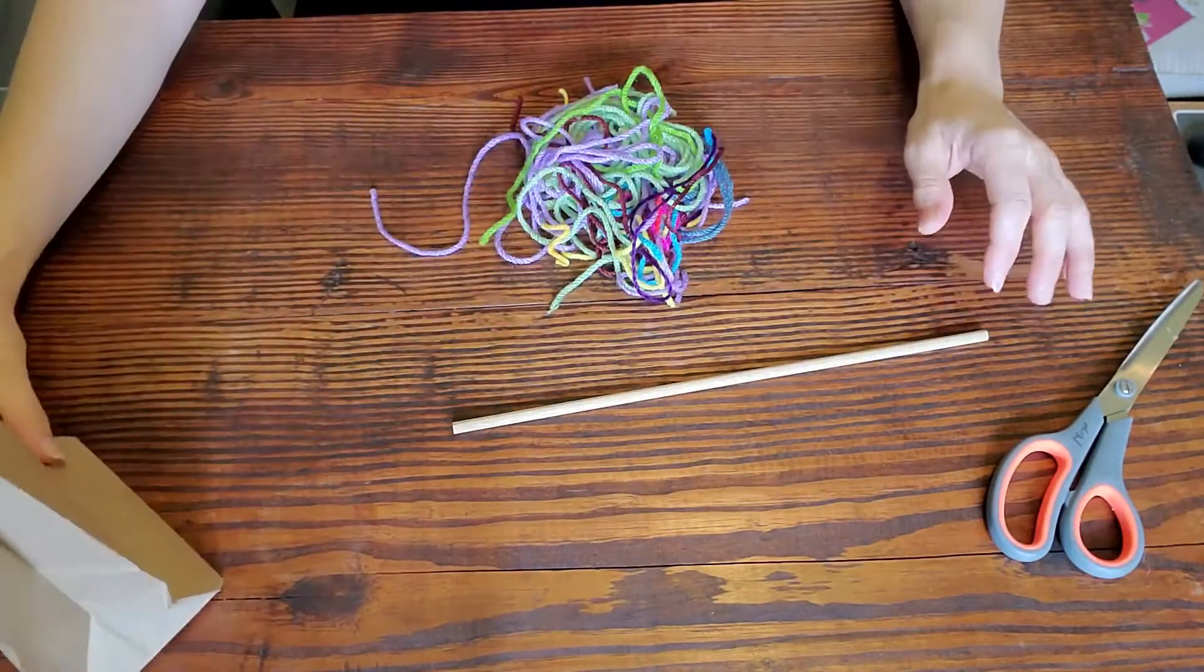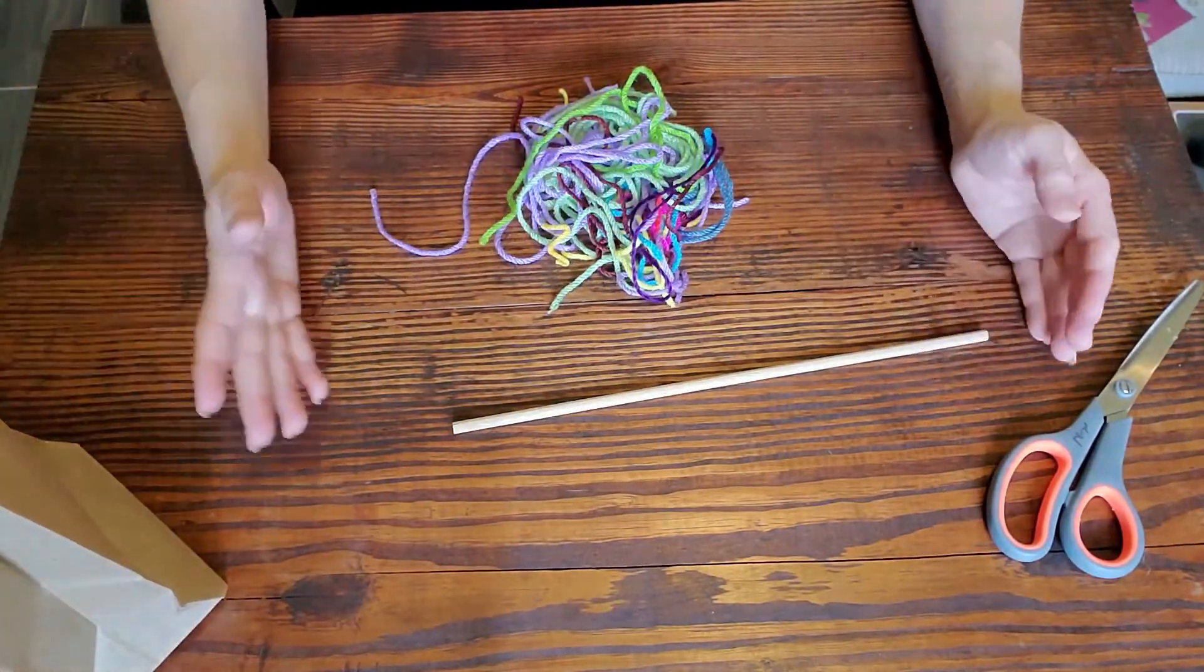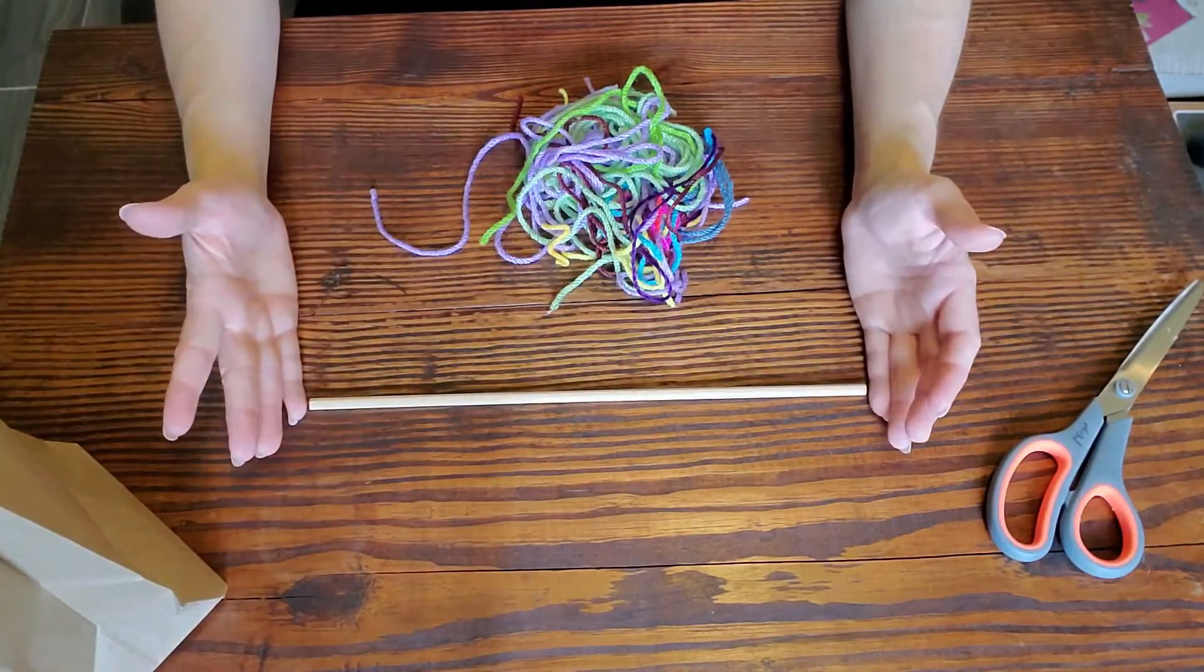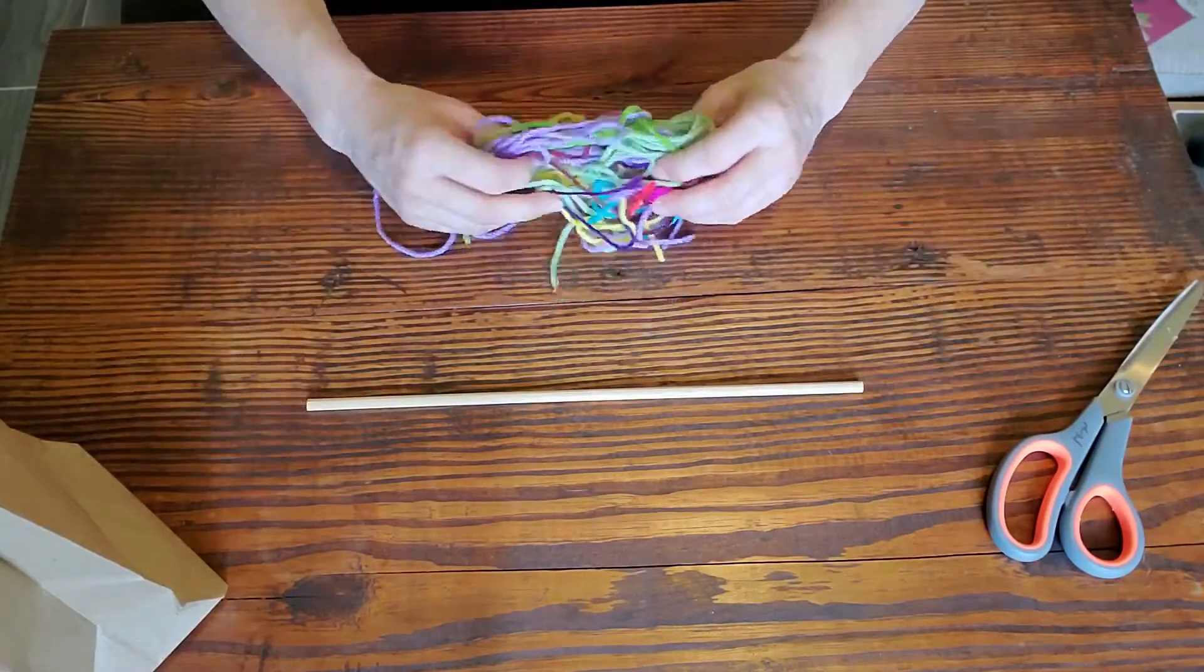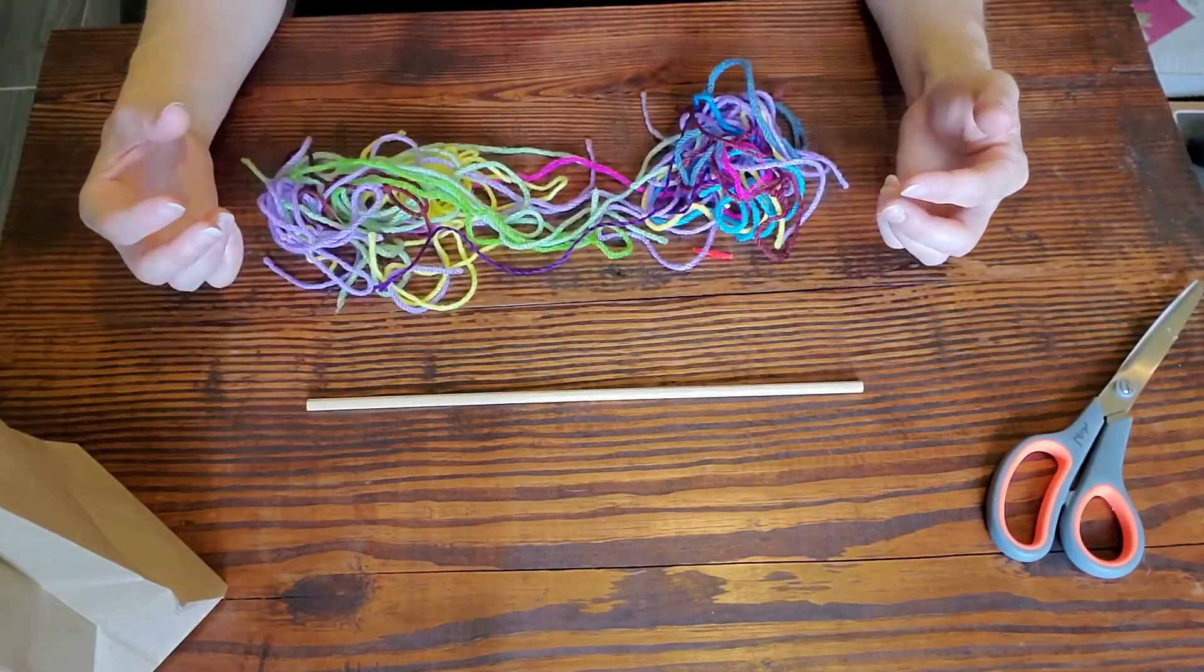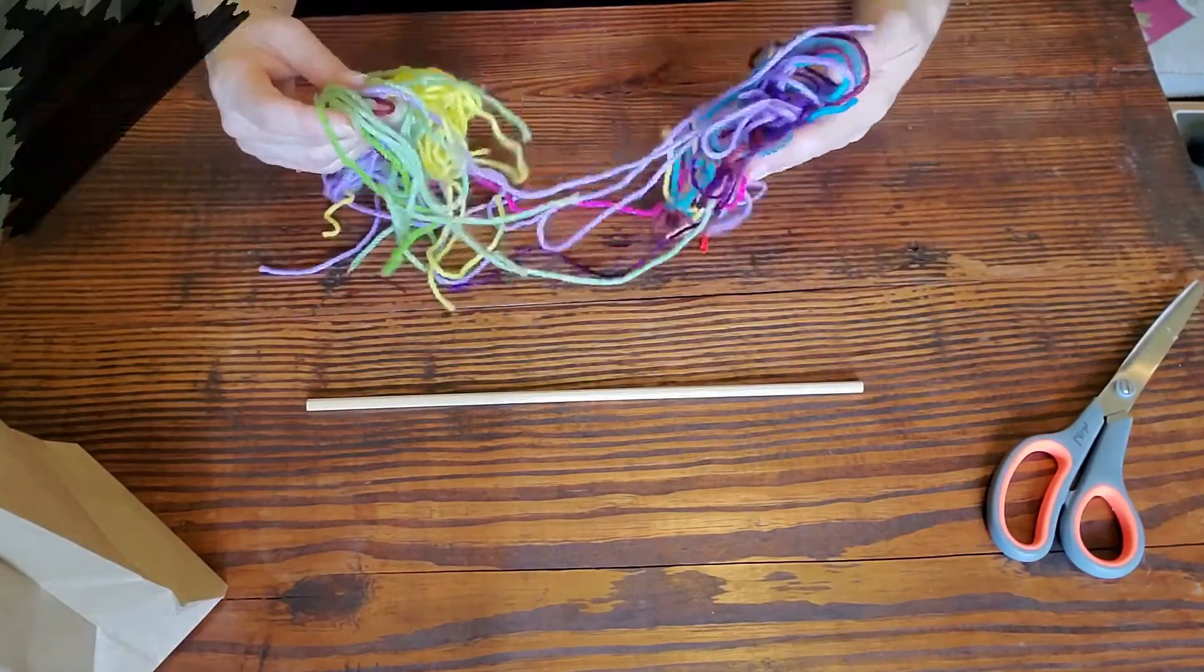So if you weren't able to pick up a craft kit, then all you're going to need to do is find a stick. You can use a twig from outside that's nice and straight, and then grab some scrap yarn. It doesn't have to be a full thing of yarn. It can be all the little pieces.